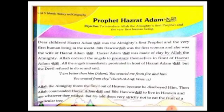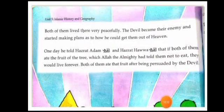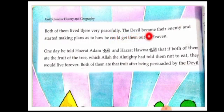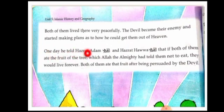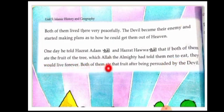Turn to page number 40. Both of them lived there very peacefully — underline peacefully, it means without any disturbance. The devil became their enemy and started making plans to get them out of heaven. One day he told Hazrat Adam alayhislam and Bibi Hawa alayhislam that if they ate the fruit of the tree which Allah had told them not to eat, they would live forever. Both of them ate that fruit after being persuaded by the devil — underline persuaded, it means to convince someone by giving a reason.